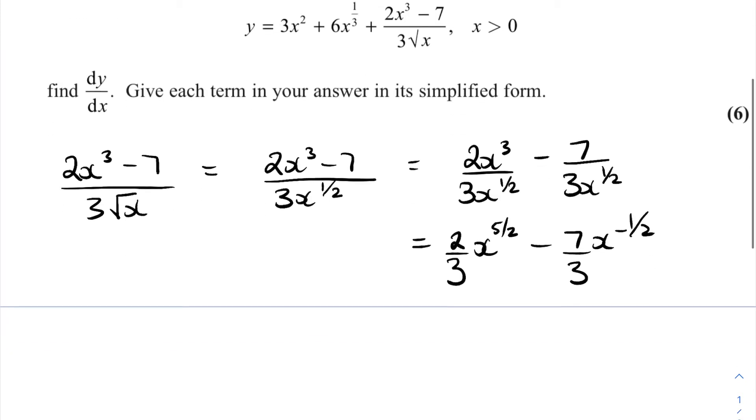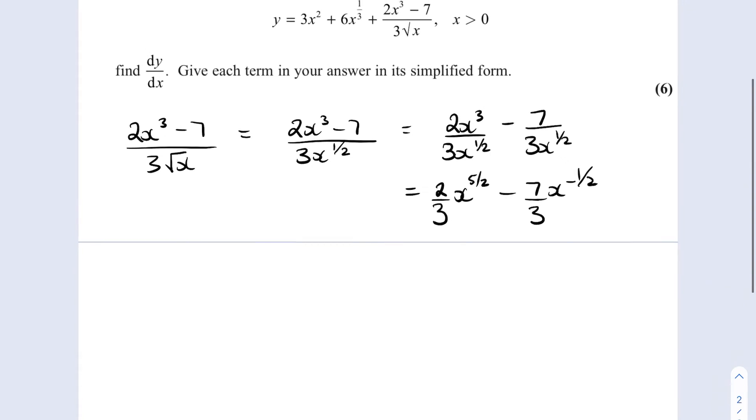Okay so let's write y equals 3x squared plus 6x to the third now with the two thirds x to the 5 over 2 minus 7 thirds x to the minus a half. And I've done this because now each of the terms are clearly polynomial.